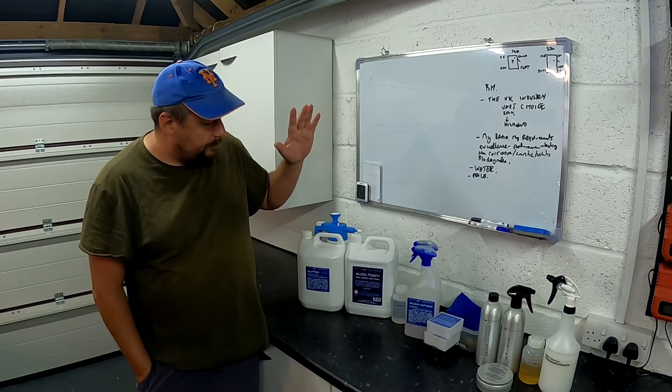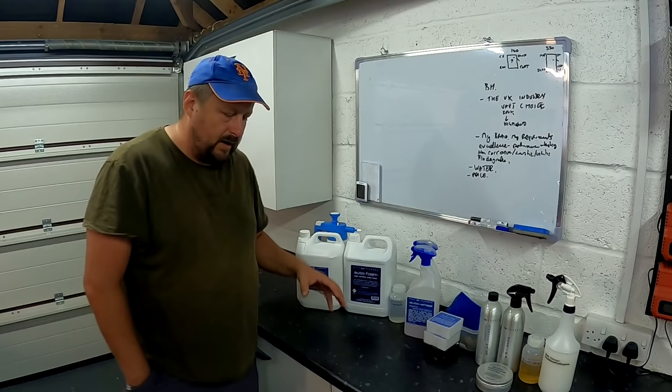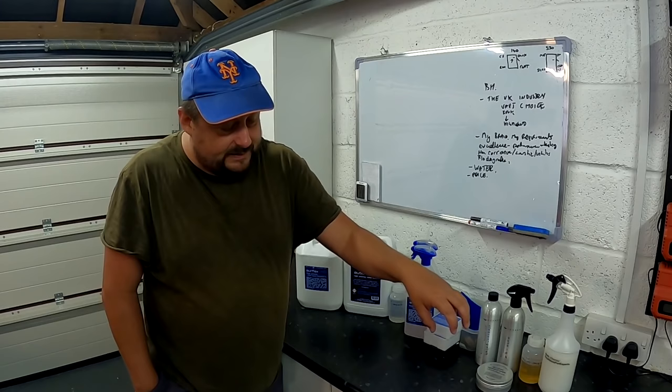And then their range seems to be expanded to include fallout removers, waxes and loads of other products. Well, not loads, a reasonably limited range. So the next thing, guys, is to understand how Bilt Hamber fits into how you detail a car. And I'm always describing detailing as in three sections: washing, decontaminating, polishing and protecting.